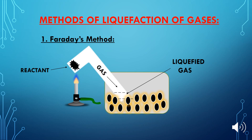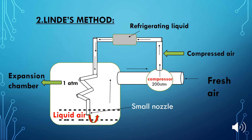Most methods of liquefaction of gases are based on the Joule-Thompson effect. One important method is Faraday's method, in which cooling is produced by using a freezing mixture of ice and various salts. Gases like sulfur dioxide, carbon dioxide, and chlorine can be liquefied by this method under their own pressure.